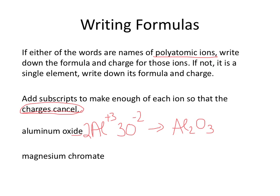Magnesium is Mg with a plus 2 charge. Chromate is CrO₄ with a minus 2 charge, so those will cancel out on their own, so it's just MgCrO₄.